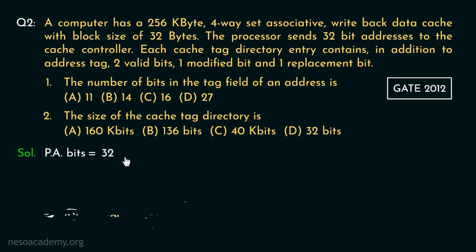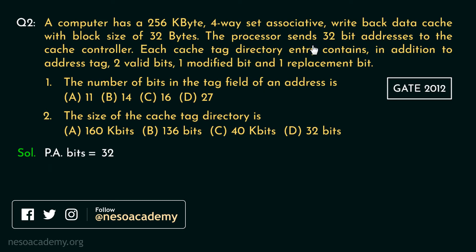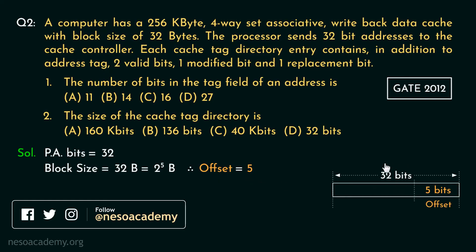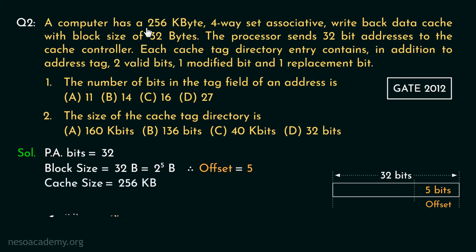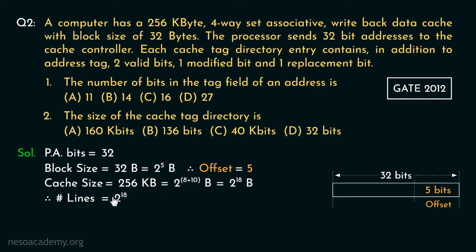The physical address is 32 bits. The block size is 32 bytes, which is 2 to the power 5, so 5 bits are used for the offset. The cache size is 256 kilobytes, which is 2 to the power 18 bytes (since 256 = 2⁸ and kilobyte = 2¹⁰). The number of cache lines is the cache size divided by the line size: 2 to the power 18 divided by 2 to the power 5, giving 2 to the power 13.